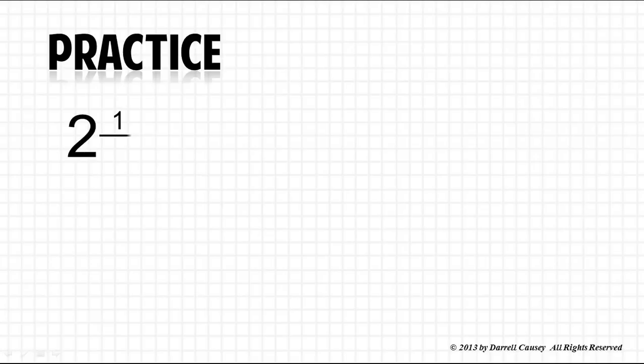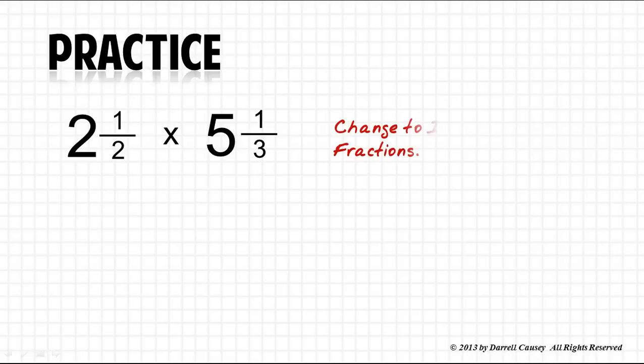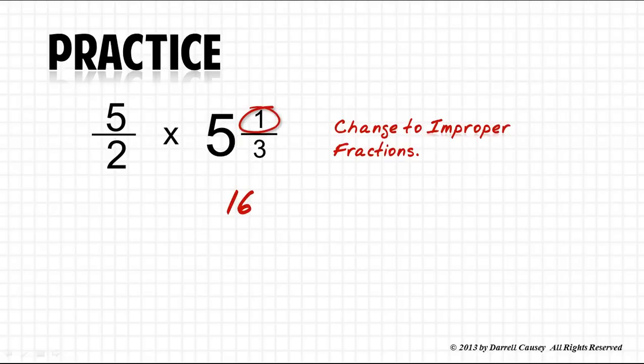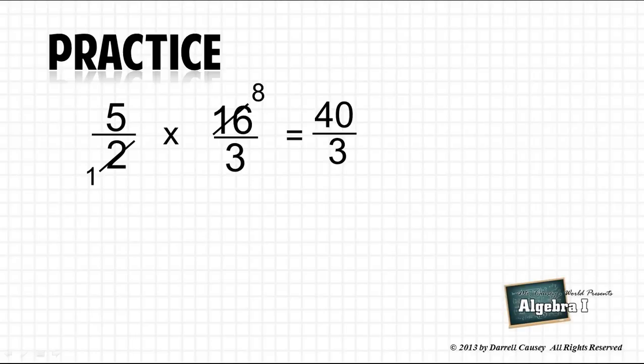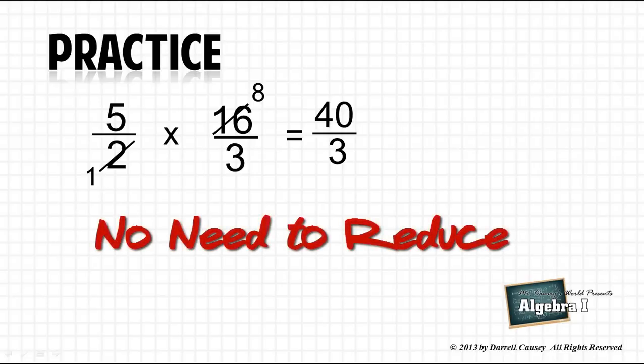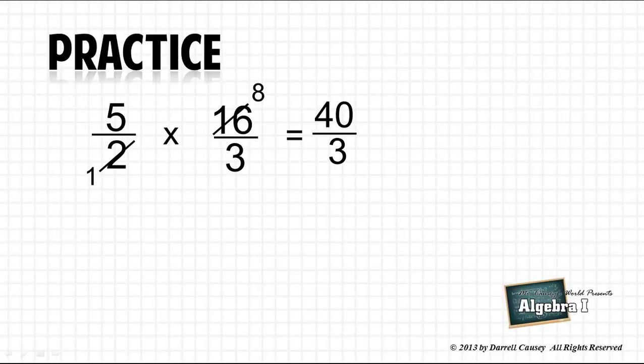All right, let's do a practice problem. Two and one-half times five and one-third. First thing I want to do is get rid of the improper fractions. So, I'm going to change the improper fractions. Two times two is four, and four plus one is five. Five-halves. Three times five is fifteen. Fifteen plus one is sixteen, and voila, sixteen-thirds. Now, can we cross-cancel? I think we can. So, let's cross-cancel. Two goes into sixteen eight times, two goes into two once. And so, five times eight is forty. And one times three is three. If we cross-cancel properly, then there is no need to reduce. It's already reduced. And forty divided by three is our fraction, or forty-thirds.